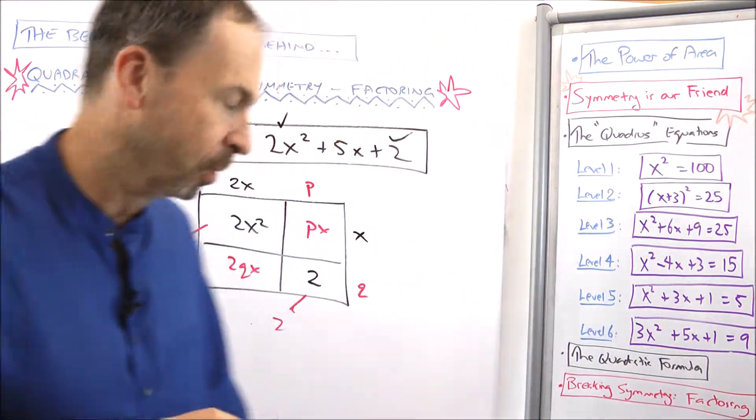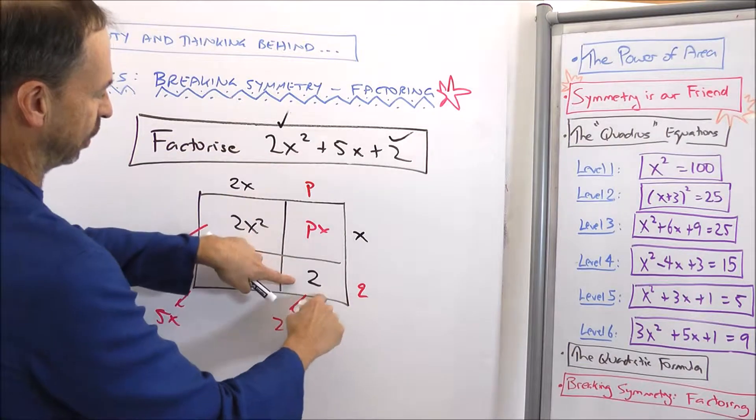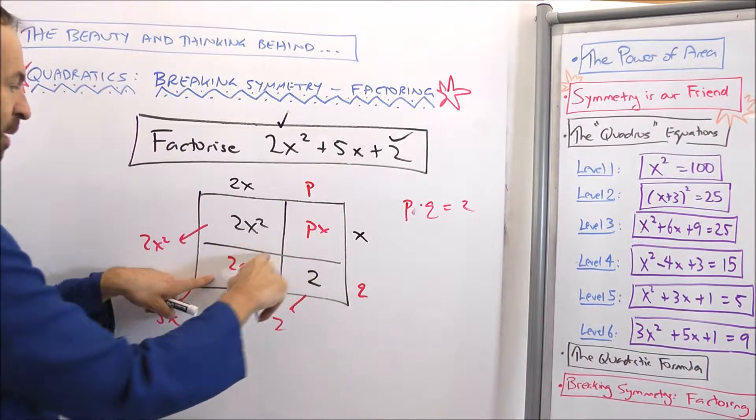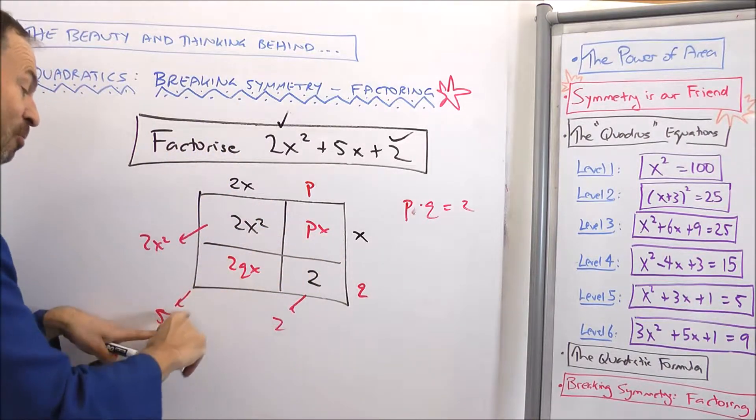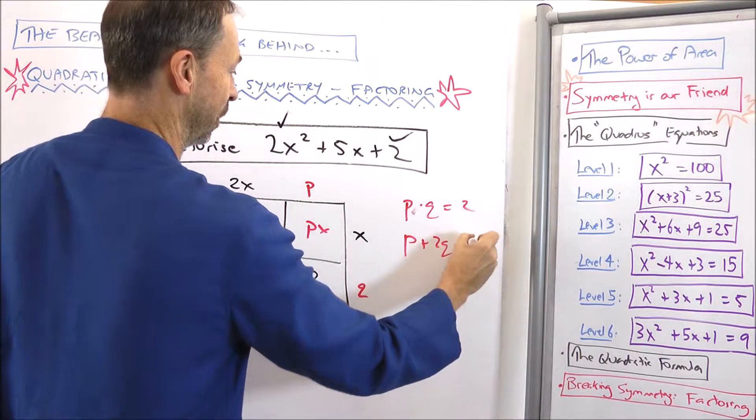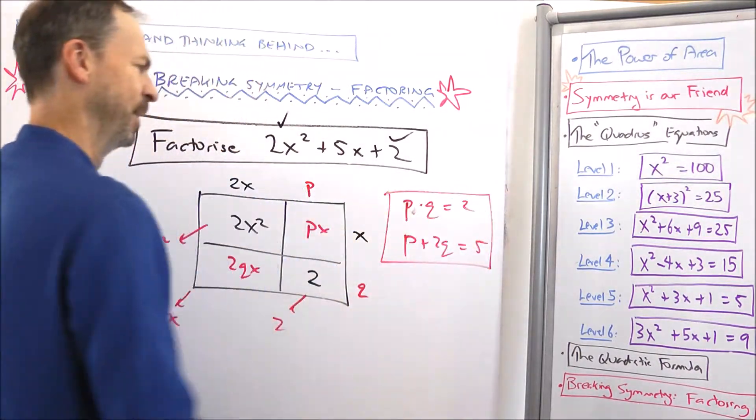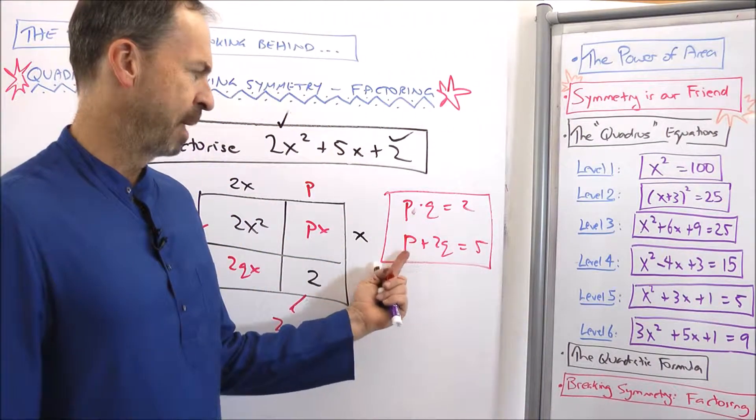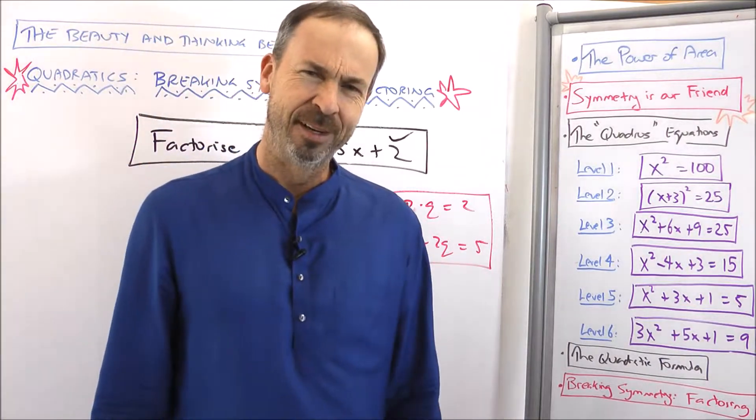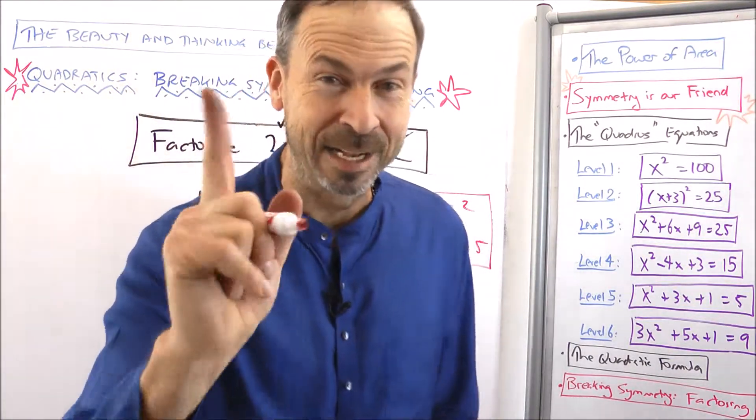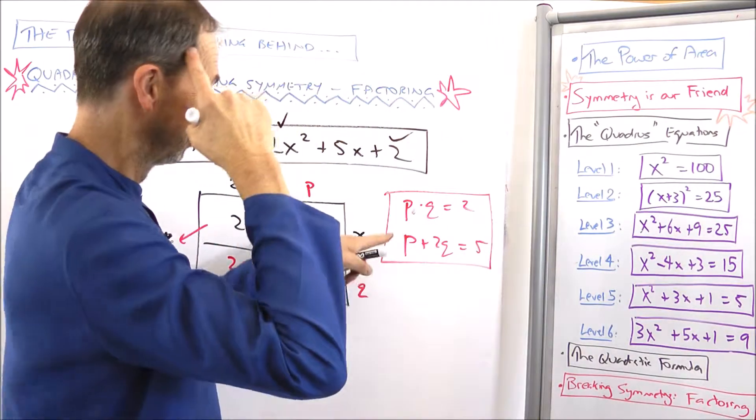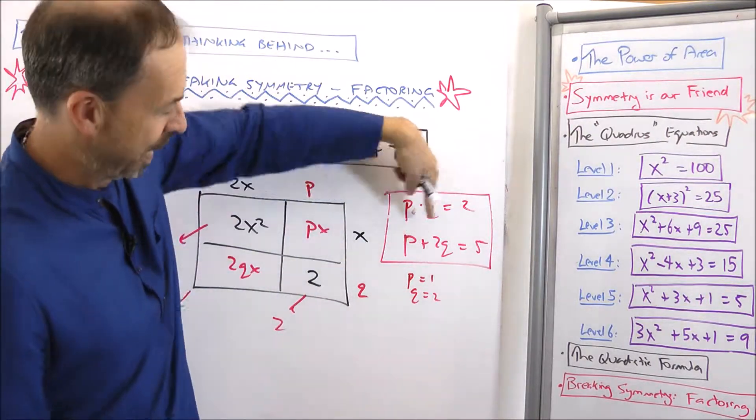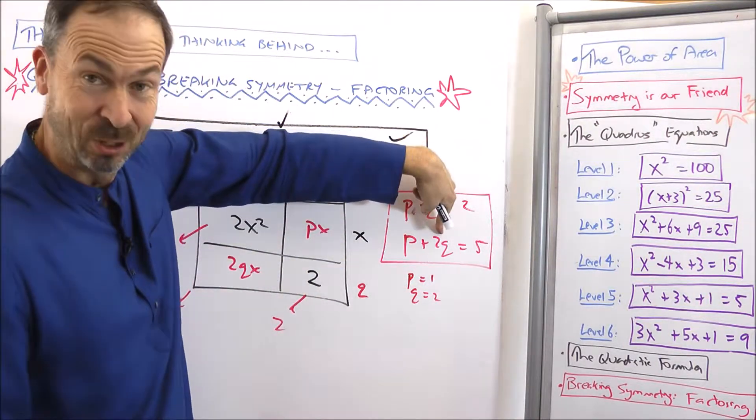So what do I need p and q to do for me? Well, I need p times q to be 2. So I would get two factors of 2 whose sum is p plus... The sum of p plus 2q makes 5. p + 2q makes 5. Oh, now I'm going to stare at that. Can I think of two factors of 2 that have the property that p plus twice the second factor equals 5? And I'm thinking, and I luck out because my brain has thought of an example. My brain has thought of choose p equals 1 and q equals 2. 1 times 2 is 2 and 1 plus twice 2 is 5.